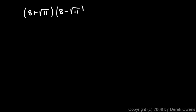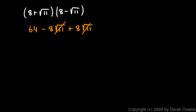Let's take a look at another example: 8 plus the square root of 11 times 8 minus the square root of 11. Let's multiply this out with a FOIL. 8 times 8 is 64. My outer terms, 8 times the negative square root of 11, is minus 8 root 11. The inner two terms give me a plus 8 root 11, and you can see those are going to cancel out. My last terms, the square root of 11 and the minus square root of 11 when multiplied will be minus the square root of 11 squared, which is just 11. So I end up with 64 minus 11, which is 53.